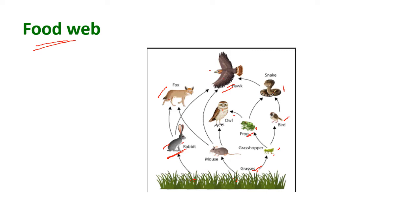The frog is eaten by owl, and also frogs may be eaten by snakes. Likewise, in an ecosystem, though there are many food chains, the food chains are interrelated or interlinked. This interlinkage of food chains in an ecosystem is known as the food web.